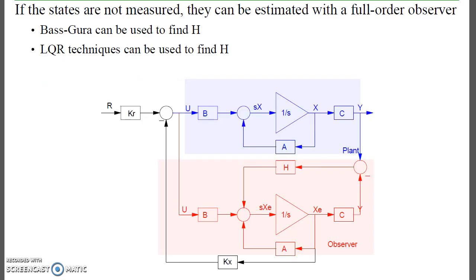If the states are not measured, I can use the full order observer. And again, the observer gains H can be found using Bass-Gora or LQR techniques, like we did in our last lecture.